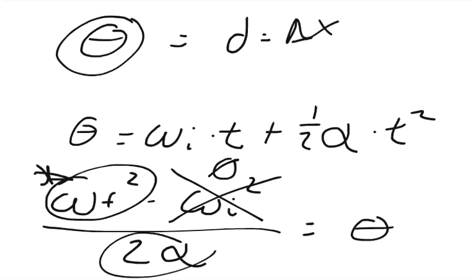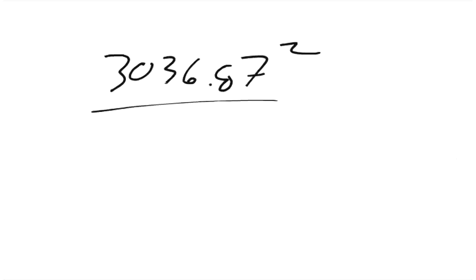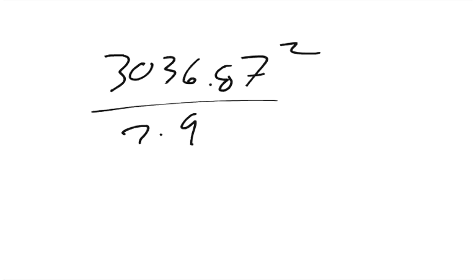divided by two times the angular acceleration, which we said was 920.26. So two times 920.26. And then this equals our radians that we've went through, our angle.